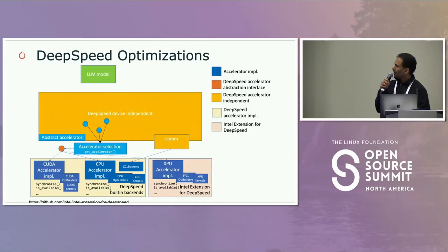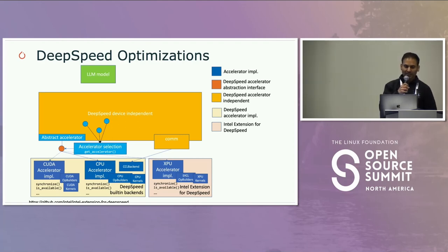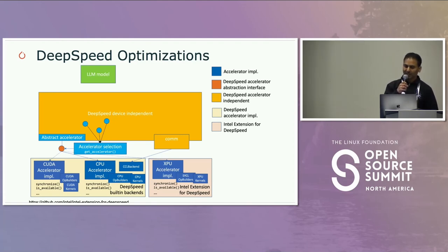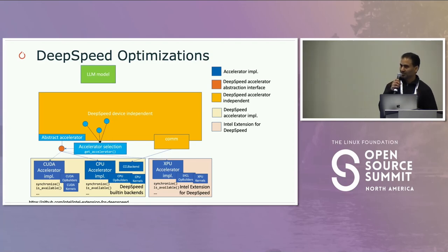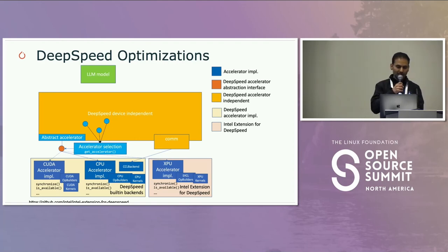We also enabled optimizations to DeepSpeed through a device-independent abstraction. We have the CPU op builders implementation and also the accelerator implementation for the CPU side. For the GPU side, we have Intel Extension for DeepSpeed, which enables similar abstractions with XPU op builders and XPU kernels. Because this is a device-independent abstraction, you can expect performance gains in your DeepSpeed workflows — the integrations and optimizations we discussed should carry over through this abstraction.